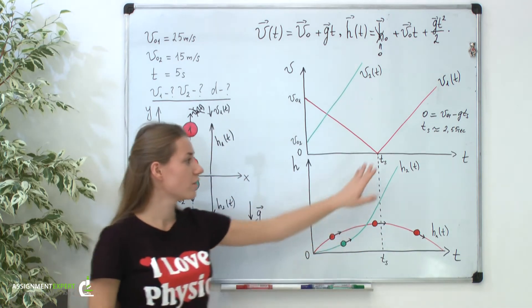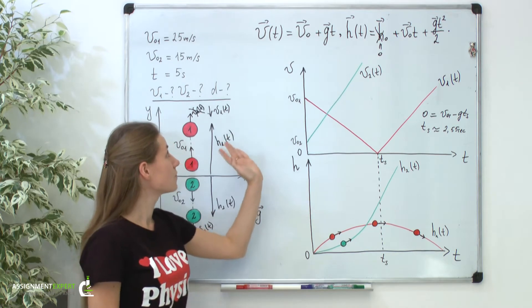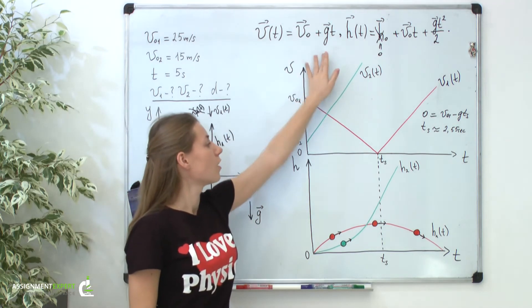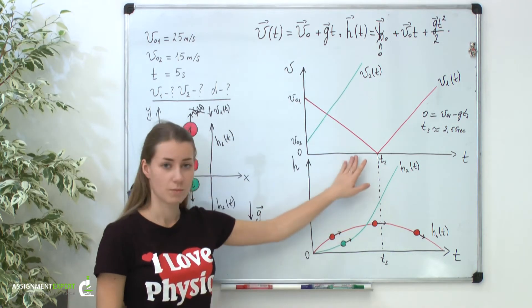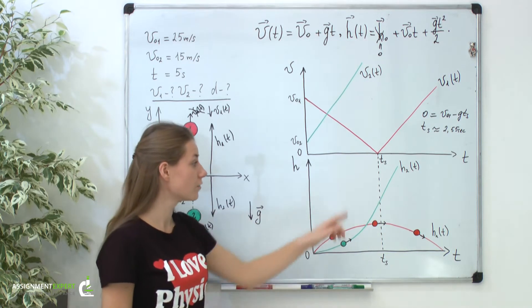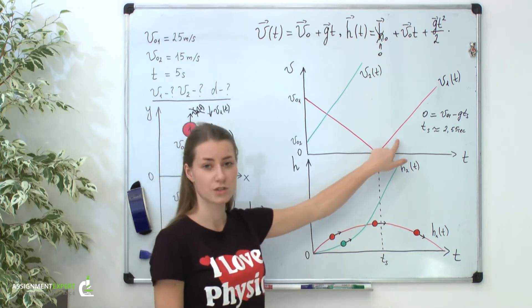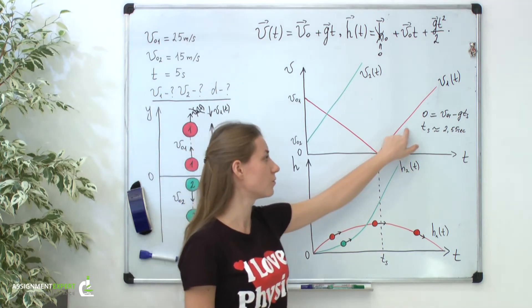By the way, you can find this moment of time without any calculations. For it, you need to plot this formula on your computer and find this moment immediately and numerically. All in all, after this time ts we can see that our velocity changes its direction and starts to increase.